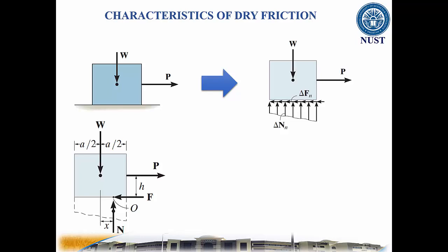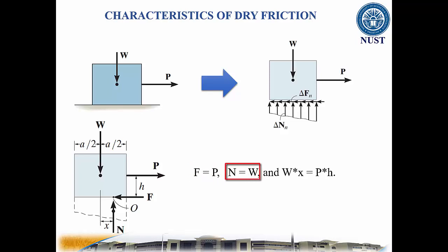For the body shown here to be in equilibrium, the following must be true: F equal to P, N equal to W, and the product of W times X equal to the product of P times H.